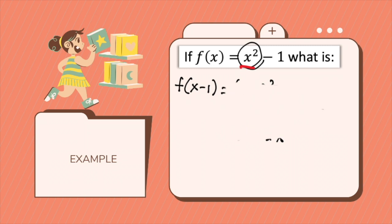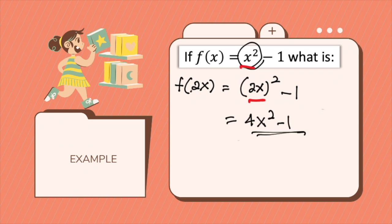Now what if your input given is, let's say you have 2x. All you need to do is substitute x with 2x, squaring that, just substitute minus 1. So squaring 2x will be 4x squared minus 1. So that will be your output.